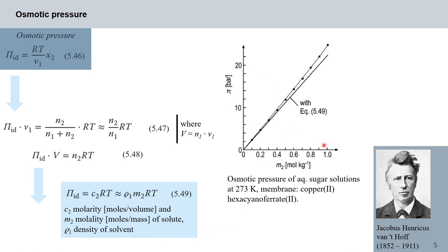The figure on the right shows how well expression 549 actually works, using a sugar solution as an example. From the equation, the osmotic pressure for a one-molar solution equals RT mol per dm³. At 273 K this is roughly equal to 25 bar — an amazing amount of pressure. We can therefore use measurements of the osmotic pressure, for example in a Pfeffer cell, to measure concentrations and molecular mass quite accurately. The figure shows good correspondence between the measured data and the equation.